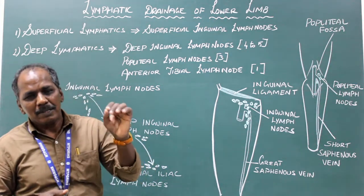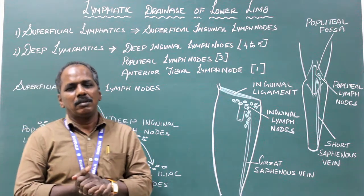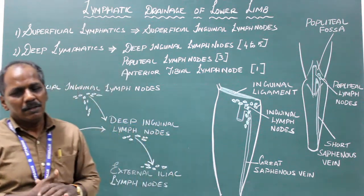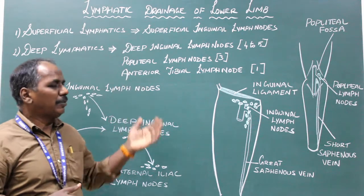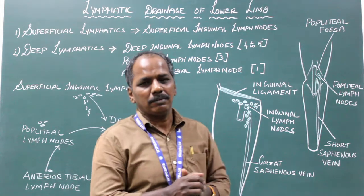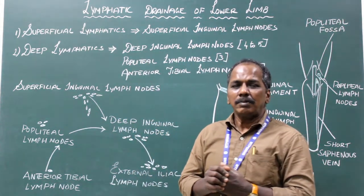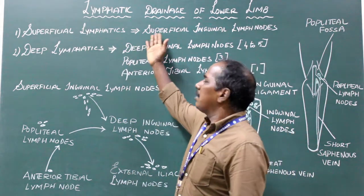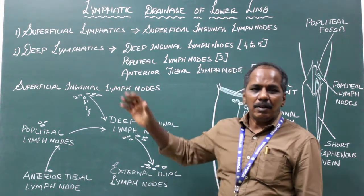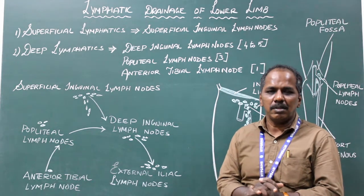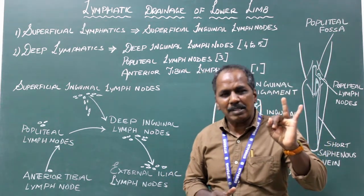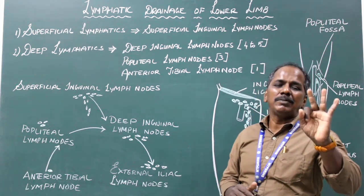The lymph nodes present in the lower limb are classified into two types: number one, superficial lymph nodes, and number two, deep lymph nodes. The superficial lymph nodes include the superficial inguinal lymph nodes. The deep lymph nodes include the deep inguinal lymph nodes, popliteal lymph nodes, and anterior tibial lymph node.